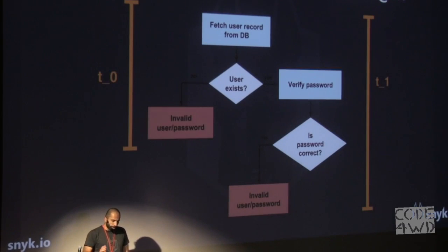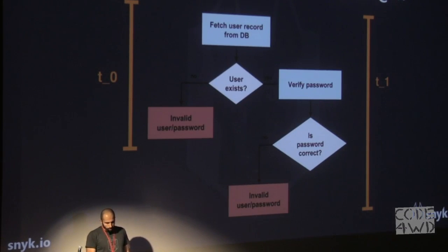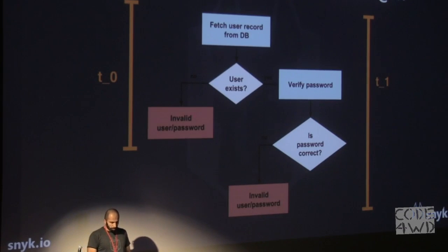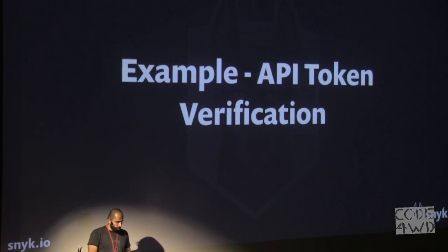So just by measuring the difference between T0 and T1, we revealed that Donald has an account on the Secret Money website. I'm oversimplifying the example here just because we don't have enough time to go into the details. Let's look at another example — this time API token verification.